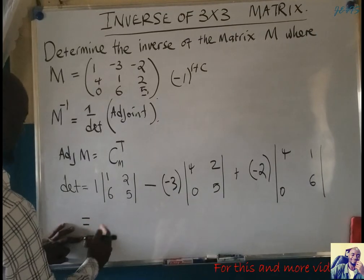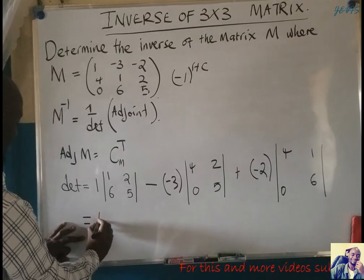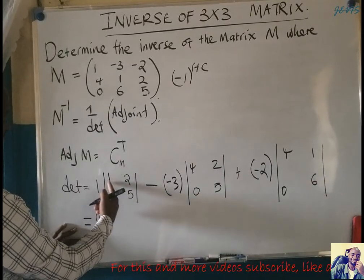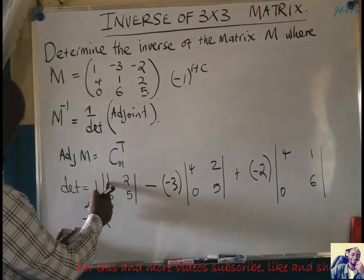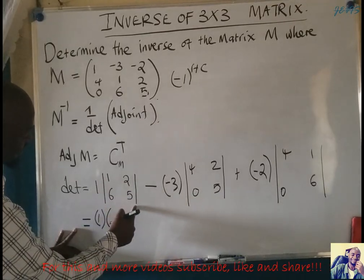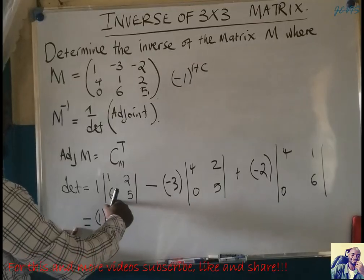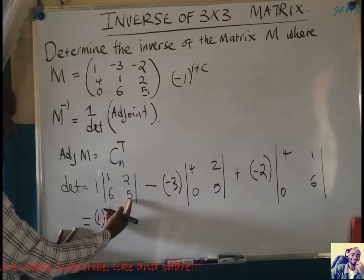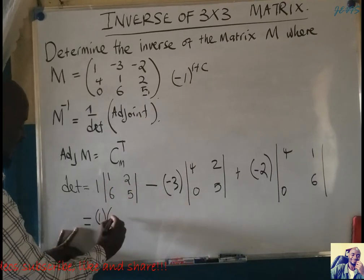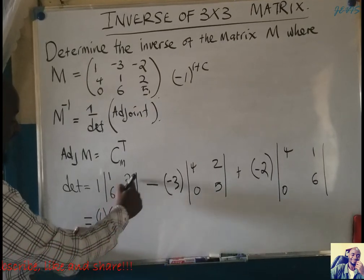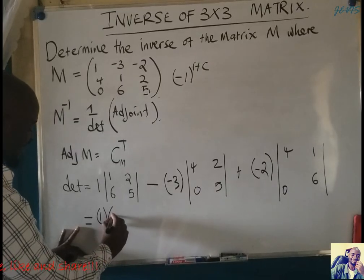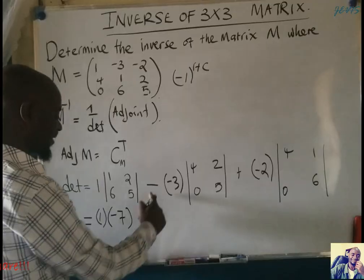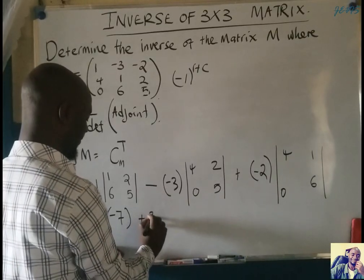The determinant is equal to one multiplied by its 2×2 minor: the major diagonal product minus the minor diagonal product. So it's five multiplied by one equals five, minus twelve, giving negative seven. Then we come here — this will be plus three, and this will be twenty.